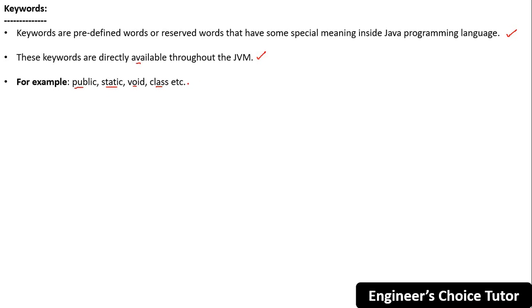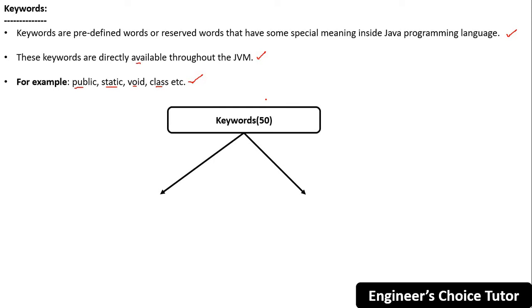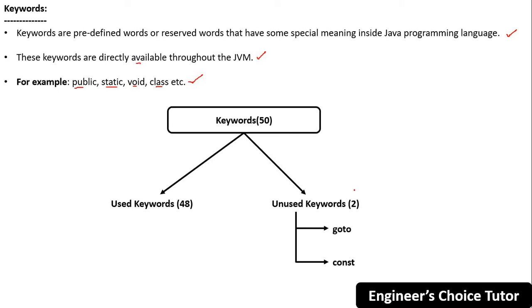We have 50 keywords, and these are divided into two parts: used keywords and unused keywords. Unused keywords means we are not using these keywords in Java — if you use them, you will get a compile-time error. The two unused keywords are goto and const.